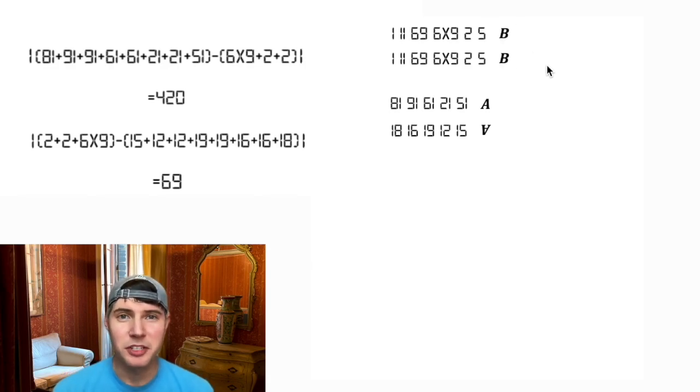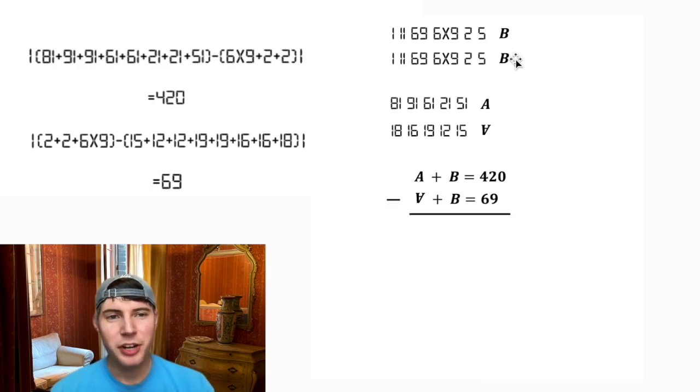I know I want the upright A plus the upright B to equal 420, and the upside down A plus the B to equal 69. So then I subtracted these. The B's are going to cancel, which gives me A minus upside down A on the left hand side, and on the right hand side 420 minus 69 is 351.